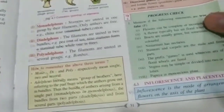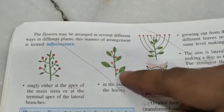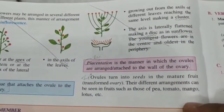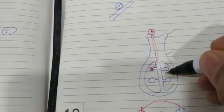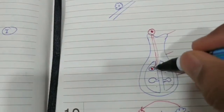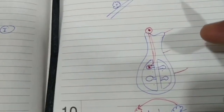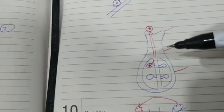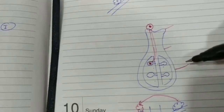Now let's talk about inflorescence — the mode of arrangement of flowers on the axis of the plant. There are different ways in which flowers may be arranged, as seen in diagrams. Finally, placentation is the manner in which the ovules are arranged or attached to the wall of the ovary. Different plants have different arrangements of ovules in the ovary. This matters because when we cut open a fruit, the arrangement of seeds reflects the placentation — after all, the ovules become seeds and the ovary becomes the fruit after fertilization.